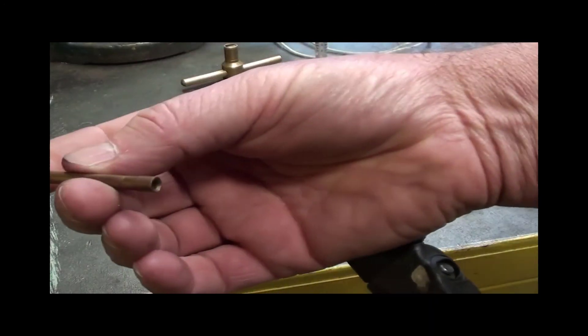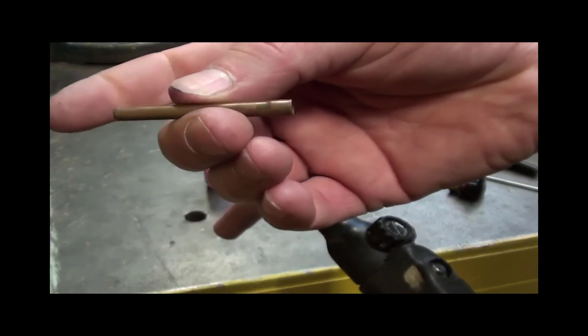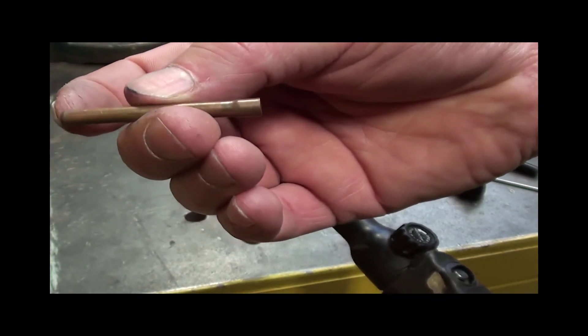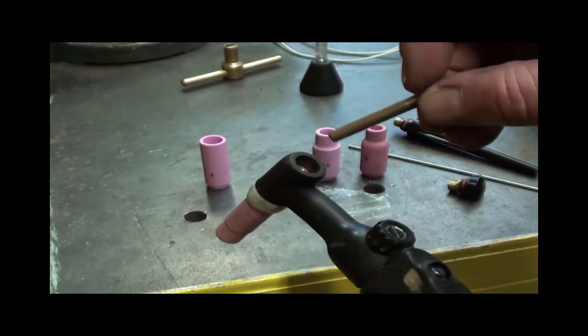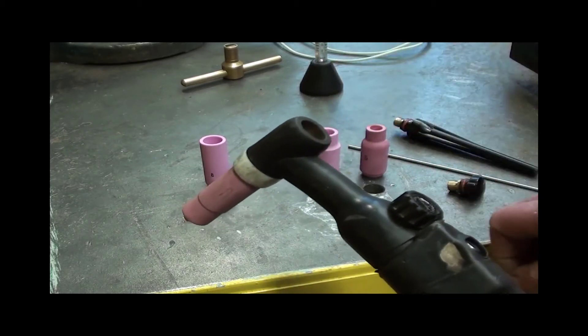Then we need to put the collet into the actual torch. Now this small end, this end which I'm tapping with my finger has got a small taper on it. As you can see the other end is a bit bigger. Now that goes on the back face. So the small end into the collet holder, just drop it in.